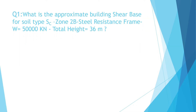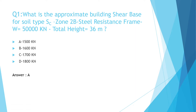What is the approximate building shear base for soil type SC, zone 2b, steel resistance frame, W equal 50,000 kN, and total height equal 36 meters? A: 1500 kN, B: 1600 kN, C: 1700 kN, D: 1800 kN. The correct answer is A: 1500 kN. The step solutions are shown.